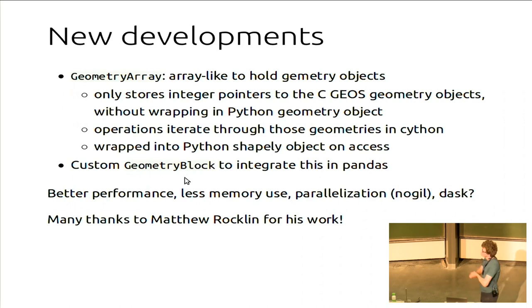Luckily there are some recent new developments. It's a collaboration with Matthew Rocklin. It was kind of a pet project for us this summer. And what we tried is, what we did, is implementing, for now it's called the geometry array. And it's an array like to hold geometry objects. But instead of storing the Python objects, we only store the integer pointers to the GEOS, the actual C objects. And so if we, for a certain operation, have to iterate through those, we can iterate in Cython and directly call GEOS from Cython. Which removes a lot of the overheads. And once you access them, then it's still wrapped in a Shapely object and nice Python class to interact easily with those objects.